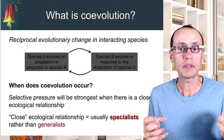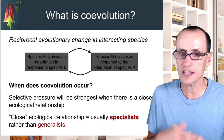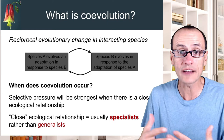Species B, because of this interaction, could also respond to the presence of species A — some activity, some interaction that species A has to alter the fitness of species B.